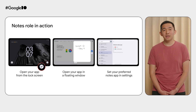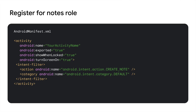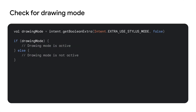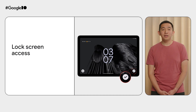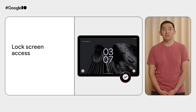Users can set the preferred note-taking app from settings. To register your app for the notes role, you'll need to declare a few things in your app manifest: handle the create note intent, set the show-when-locked attribute to true so your app is accessible from the lock screen, and set the turn-screen-on attribute to true so your app can turn the device screen on. Additionally, the activity that handles the create note intent should support multi-instance. When launched with the create note action, check if the use stylus mode extra is set to true — if so, launch a note that accepts stylus input so the user can immediately draw with their stylus or finger. When launched from the lock screen, your app should ensure user privacy and not allow access to historical notes unless the user has given consent while unlocked.